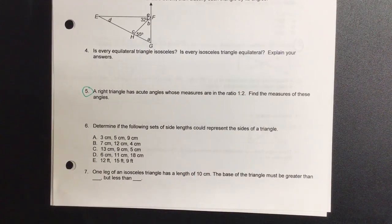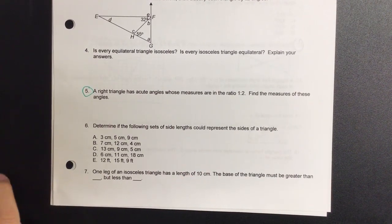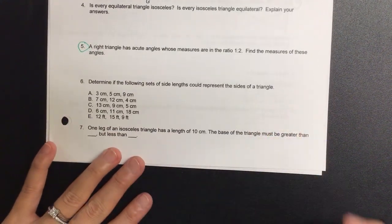Okay, Harmony, let's read number five, please. A right triangle has acute angles whose measures are in the ratio.